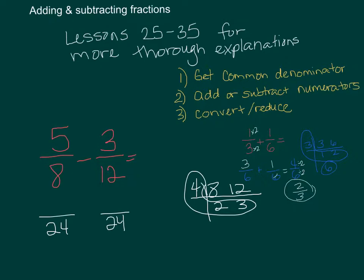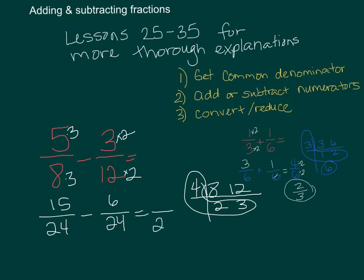To get 8 to become 24, I multiplied by 3. To keep the fraction equivalent I must do the same to the top: 5 times 3 is 15. To get 12 to become 24, I multiplied by 2, so beat up his best friend: 3 times 2 is 6. The denominator stays the same. Now subtract: 15 minus 6 is 9, giving nine twenty-fourths. It's already a proper fraction so no conversion needed. I can reduce because 3 goes into both: 9 divided by 3 is 3, 24 divided by 3 is 8. The answer is three-eighths.